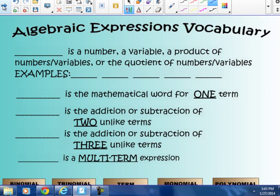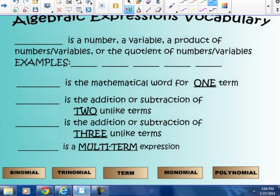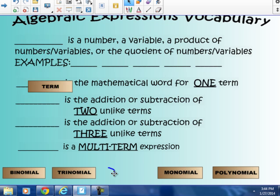To review from last year some of the terms or vocabulary that you need to know for this chapter, the first part of Chapter 3 is adding algebraic terms. Well, what is a term? A term is a number, a variable, a product of numbers and variables, or the quotient of numbers and variables.